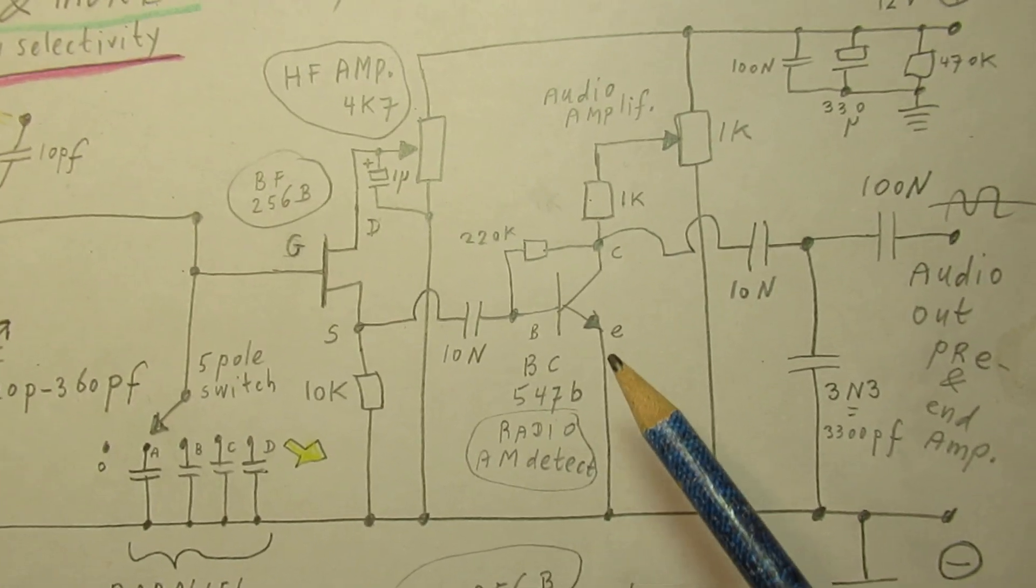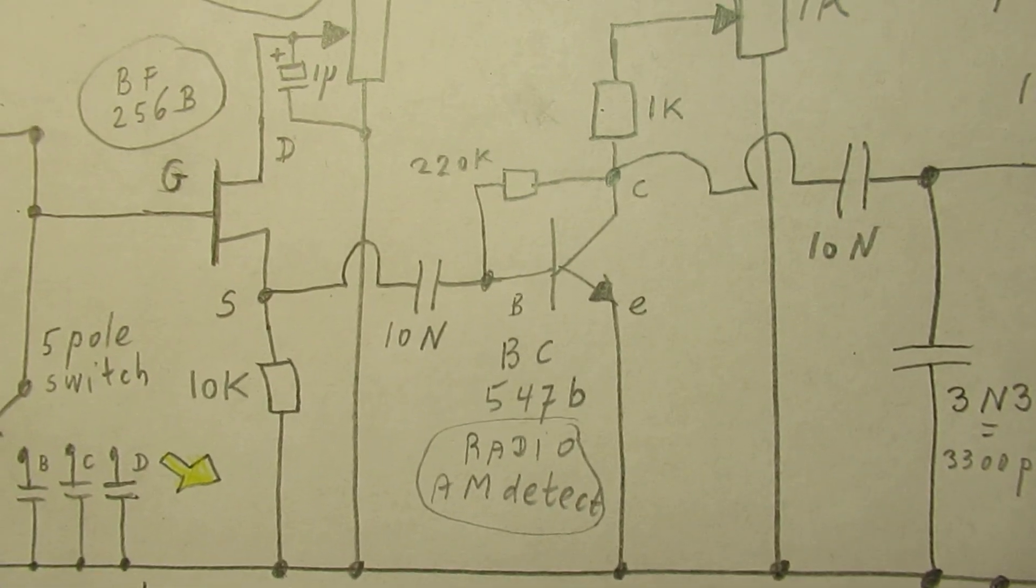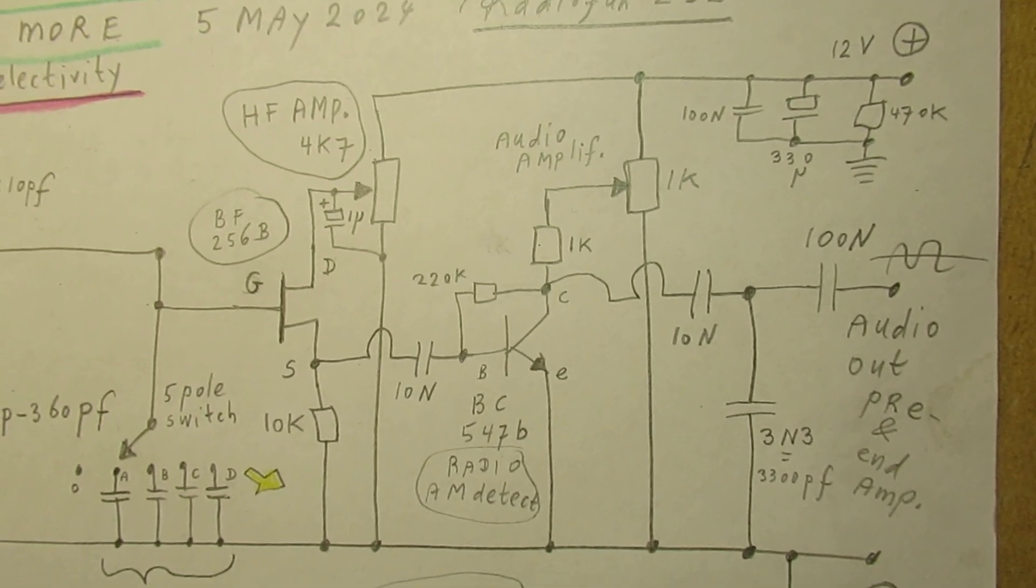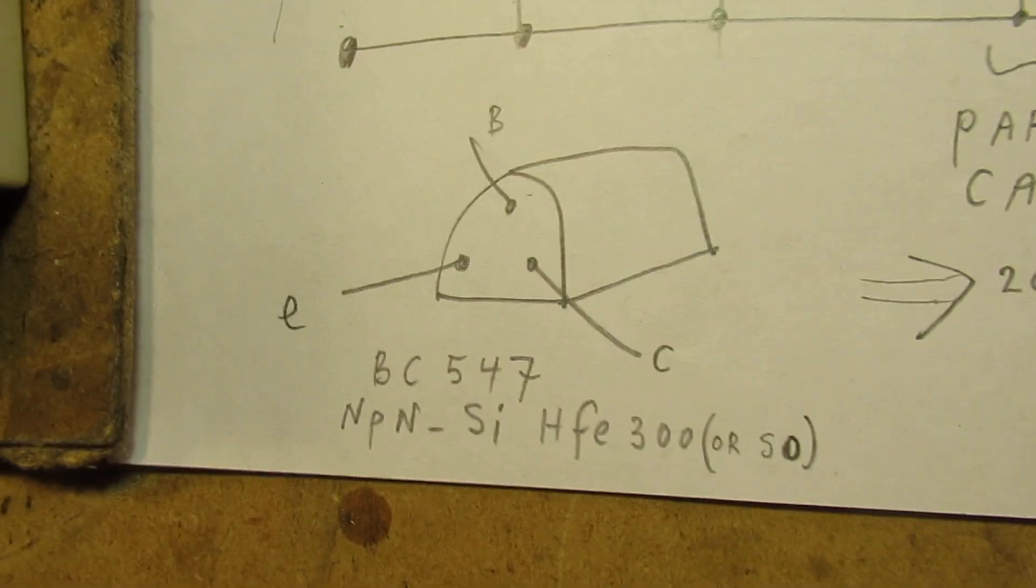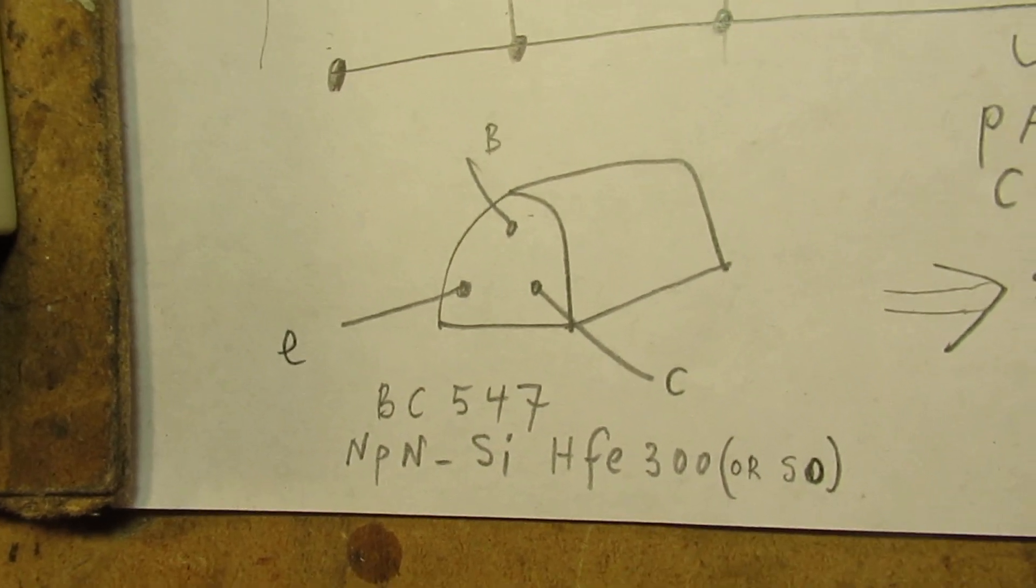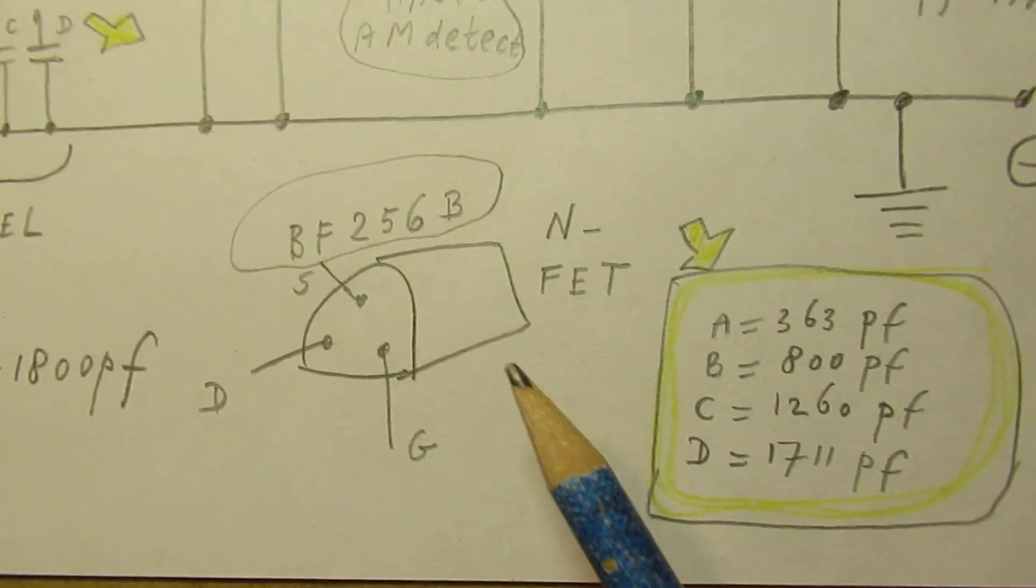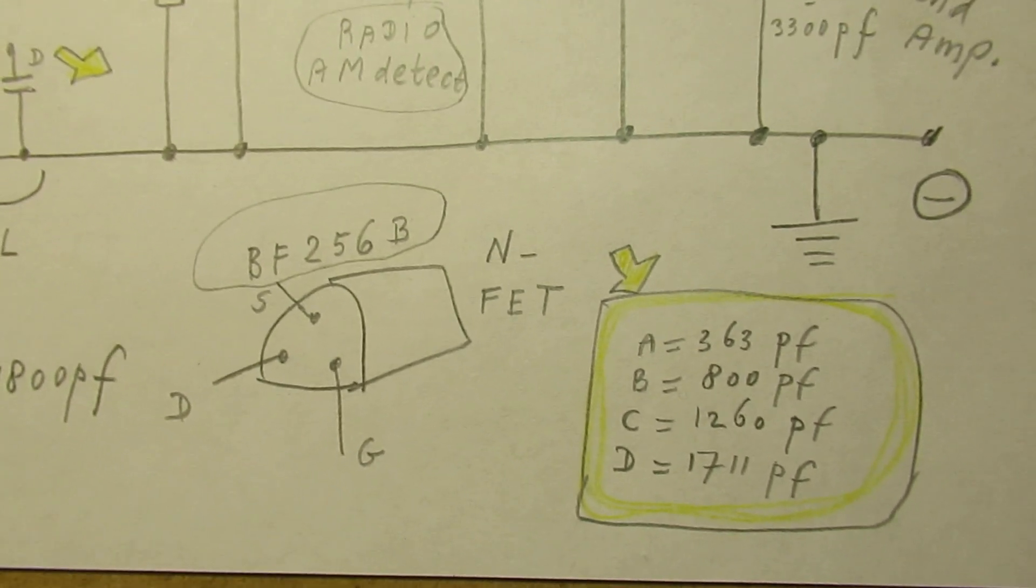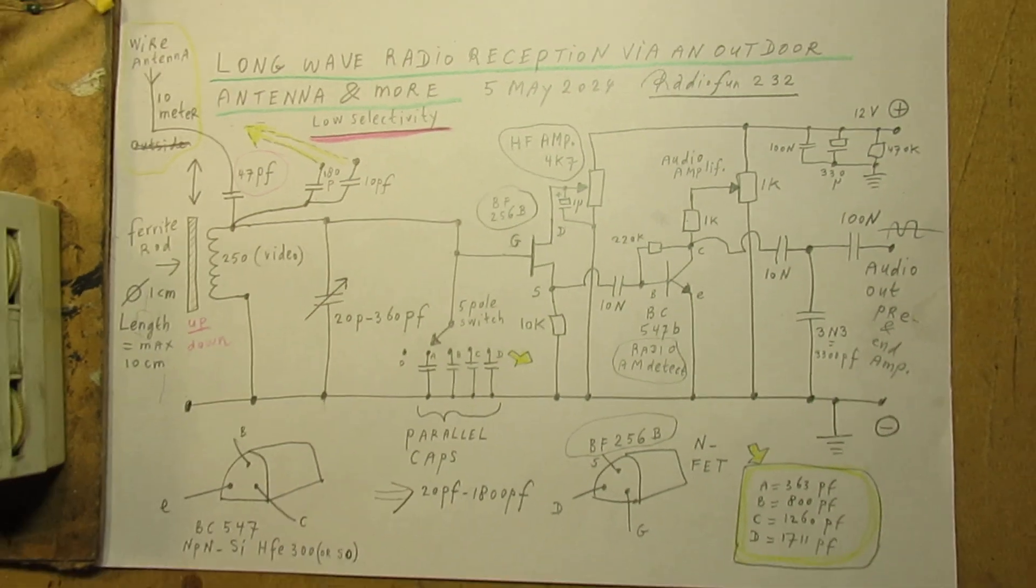The amplifier again: BC547B, NPN silicon transistor with a good amount of amplification, approximately 300. It does not need more than 300 as amplification. And this is the field effect transistor I've used, a BF256B. It's common, not obsolete.